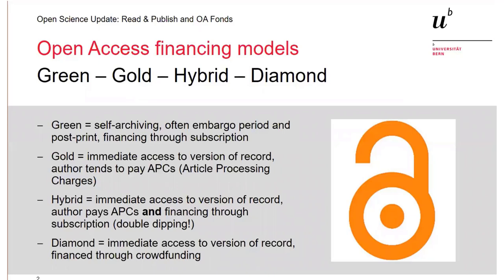I'm sure that all of you know and understand that publishing — all publishing costs money — and open access is no exception to that. As open access develops, there are a variety of financing models that have taken hold. Just for your orientation, I have put up the four major paths to open access publishing here on the slide. Today I will be focusing on open access gold — that is the immediate access to the version of record, to the publisher's version of your manuscript. Within open access gold, the variety that takes APC — that costs you as the researcher, as the author — article processing charges.